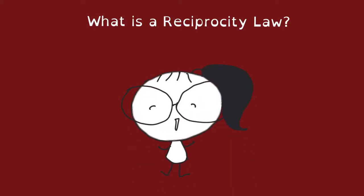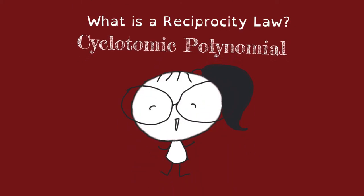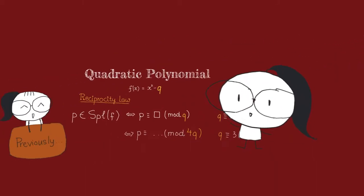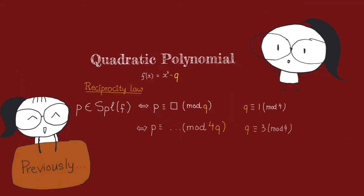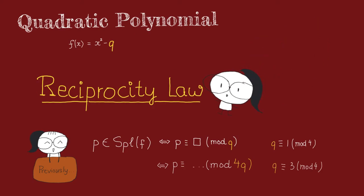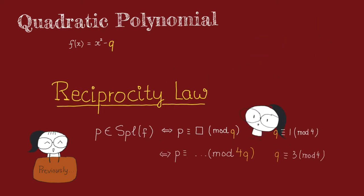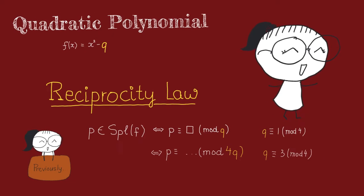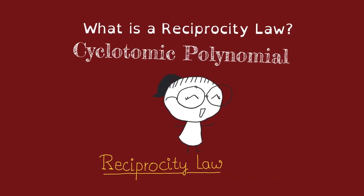Let us continue our story now for the case of cyclotomic polynomial. Previously, we have seen that in the case of a quadratic polynomial, we can use a congruence condition to describe the set of prime p such that f split over p. In other words, the reciprocity law in this case was just given by a congruence condition. Let's see if it's the same for the case of a cyclotomic polynomial.